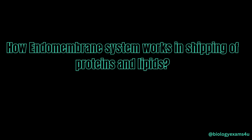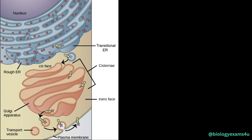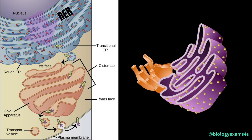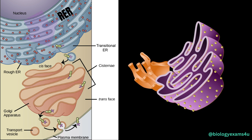Now let us take a closer look at the different parts of the endomembrane system and how they function in the shipping of proteins and lipids. The outer nuclear membrane is in continuous connection with the RER, or rough endoplasmic reticulum. It's a network of tubes that produces, modifies, and transports proteins and other molecules throughout the cell, and is often one of the largest organelles. The RER has ribosomes studded on its surface, involved in the synthesis of secretory and membrane proteins.